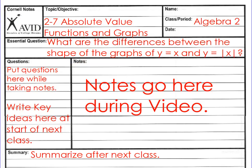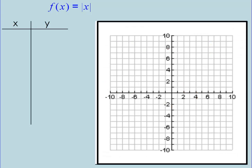Welcome to Algebra 2. This is section 2-7, Absolute Value Functions and Graphs. The essential question is: what are the differences between the shape of graphs of y equals x and y equals the absolute value of x? Let's begin.